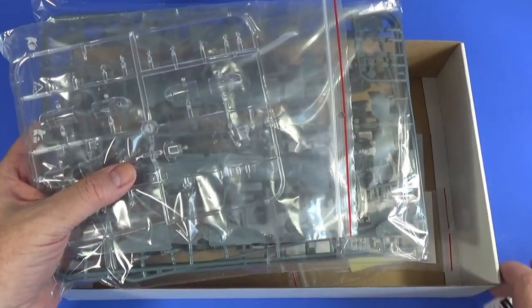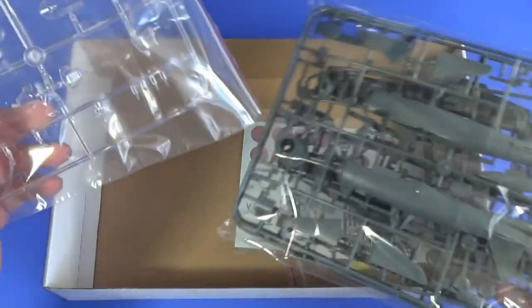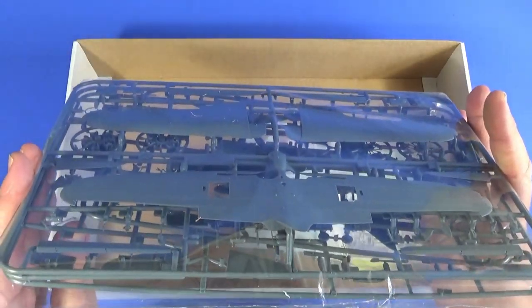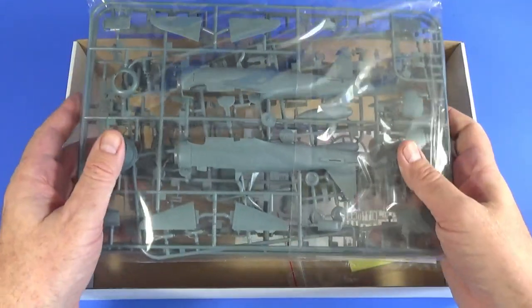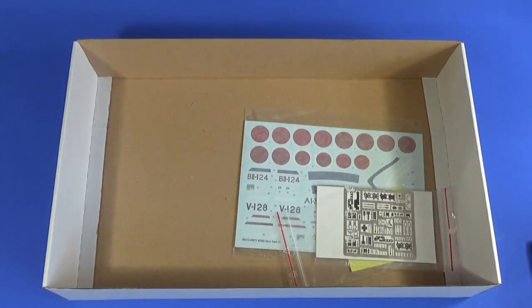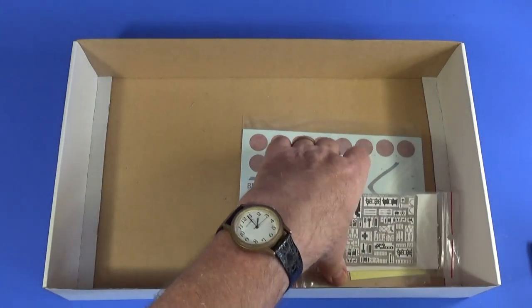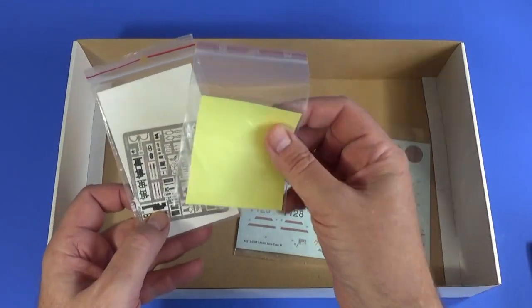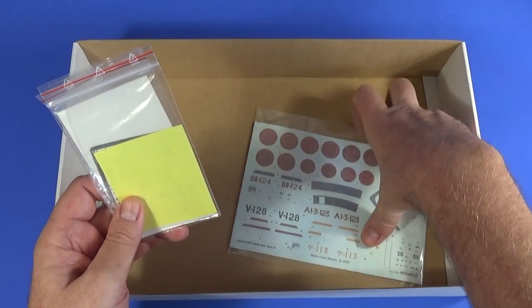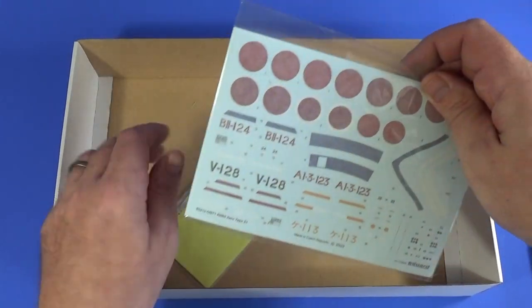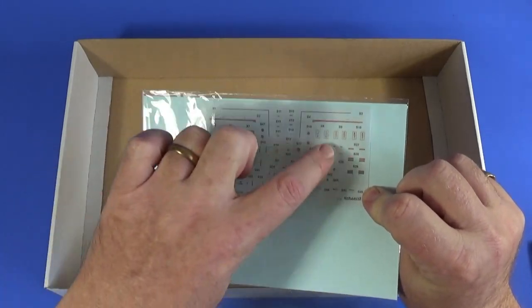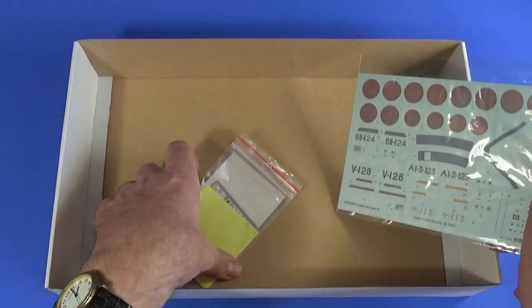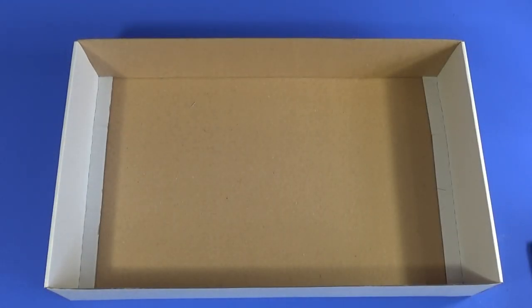Of course, we have all the bits of plastic here. A bag with the transparent parts. A bag with three frames of grey plastic. We'll have a look at those. There is a comprehensive sheet of photo etch. This is the profi pack, remember. There's a mask set. And of course, the decals for the aircraft with some stencils here and the main decals here. Let's have a look in more detail at all these things.